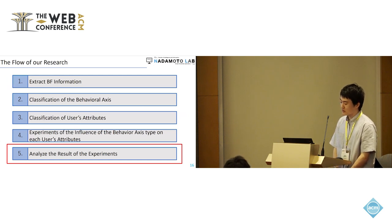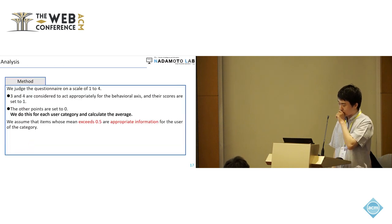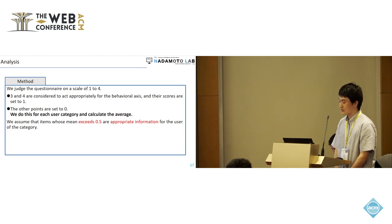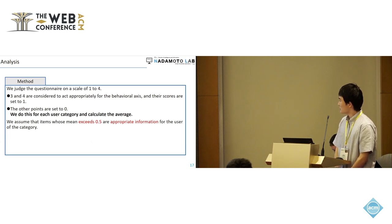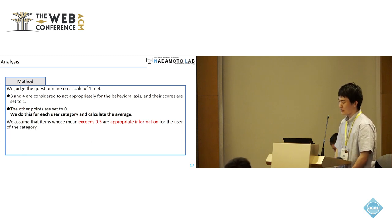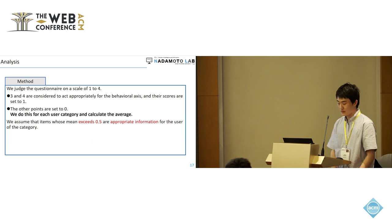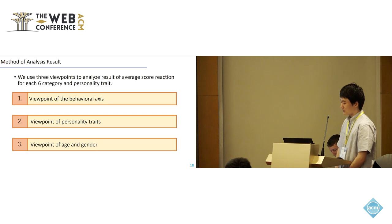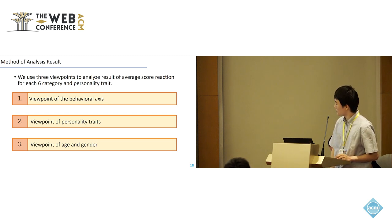Finally, we analyze the results of the experiments. We judge the questionnaire on a scale of one to four: scores of three and four are considered to indicate that the user finds the information appropriate for that BF behavior axis, and those scores are set to one, while other scores are set to zero. We do this for each user category and calculate the average. We assume that items whose mean exceeds 0.5 represent appropriate information for users in that category. We use three viewpoints to analyze the average score reaction for each of the six categories and personality traits. First, we discuss from the viewpoint of the BF behavior axis.